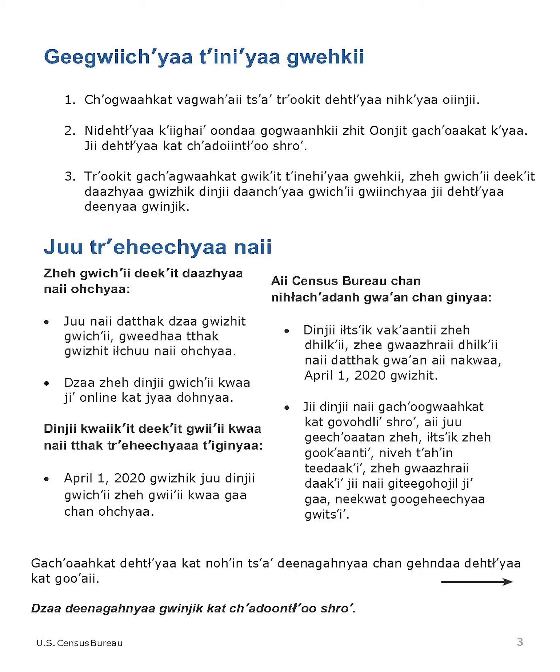Who to count? Count the people living in this house, apartment, or mobile home. Count all people, including babies, who live and sleep here most of the time. If no one lives or sleeps at this address most of the time, respond online. The census must also include people without a permanent place to live. If someone who does not have a permanent place to live is staying here on April 1, 2020, count that person.